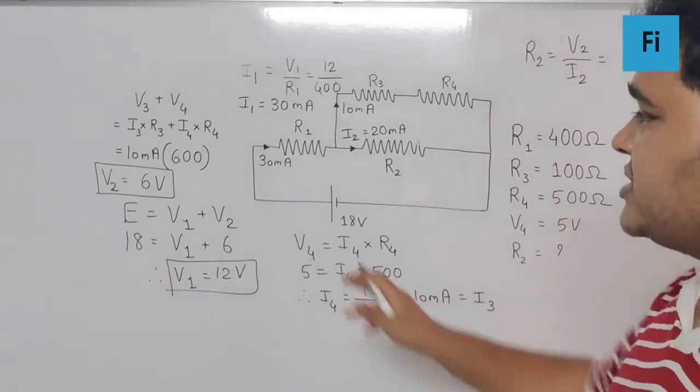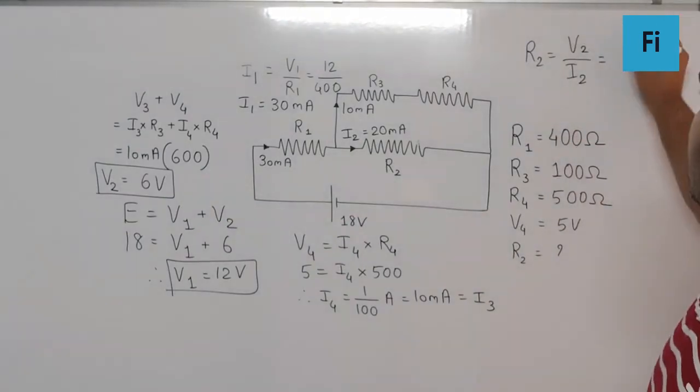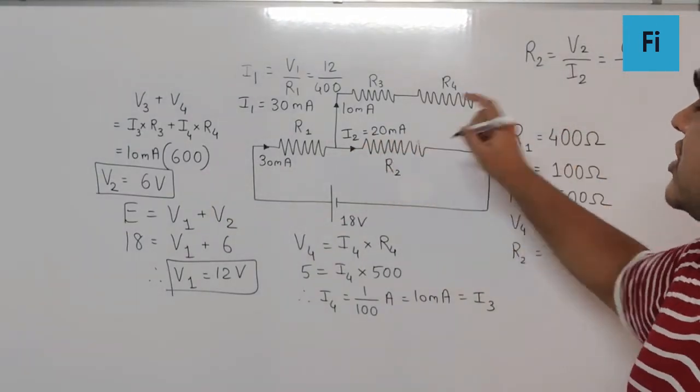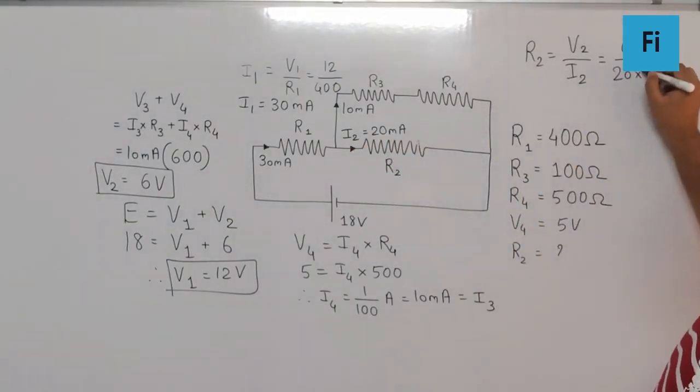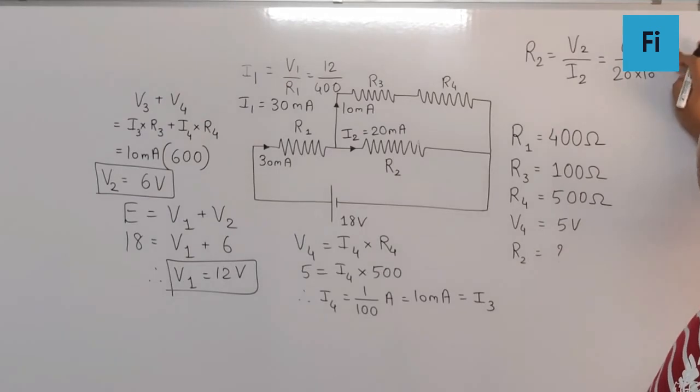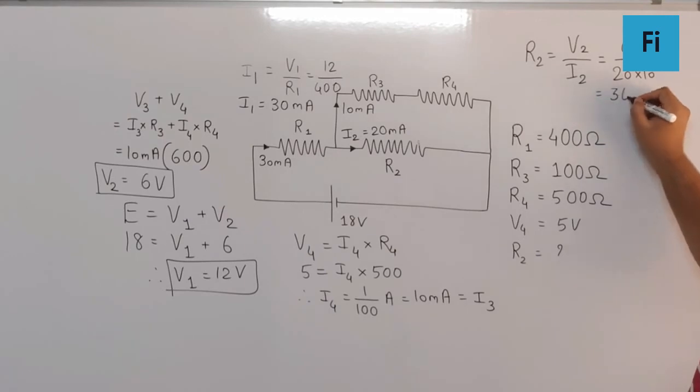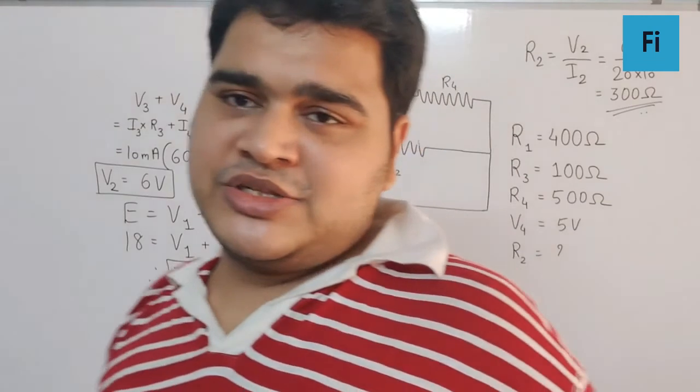Where V2 the value is 6 upon I2 is 20 milliampere. So 20 into 10 raise to minus 3. That is equivalent to 6, or I should write it as 6000 by 20, which is nothing but 300 Ohm as your final answer.